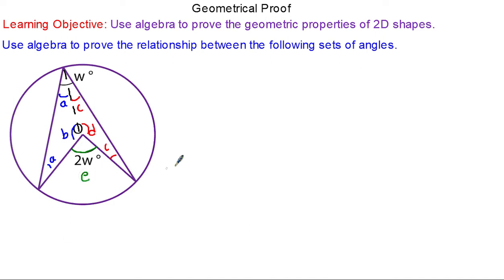Now we can begin to write some equations. We know two lots of a add b equals 180 because they are three angles in an isosceles triangle. Similarly for the red triangle 2c add d is 180 for the same reason. Finally we've got the angles at the center b add d add e must make 360. Angles at a point add up to 360.